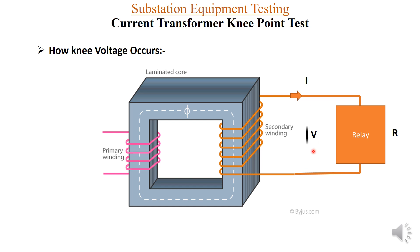This voltage should be only up to the knee point voltage level. If more current flows above the knee point value, it may saturate the core. When the core saturates, both primary and secondary windings become fully energized and no more voltage is produced on the secondary side. It is therefore very important that the current flowing here matches only the excitation current level up to the knee point voltage. We perform this test to verify that for the given CT.